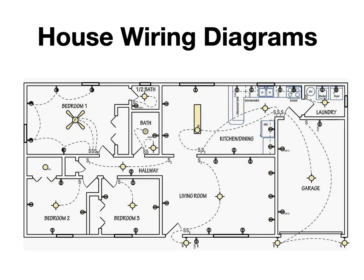A wiring diagram is a pictorial representation of an electric circuit, where the elements of the loop and the signal connections between devices and the power source are shown in conventional methods as simplified shapes. A house wiring diagram is thus a wiring diagram of a house.